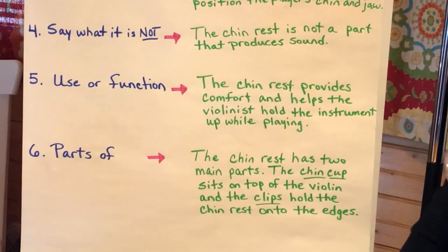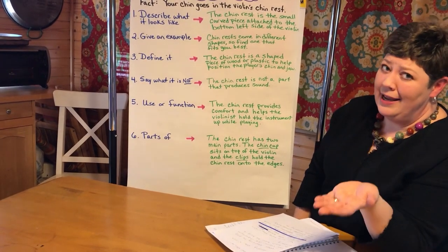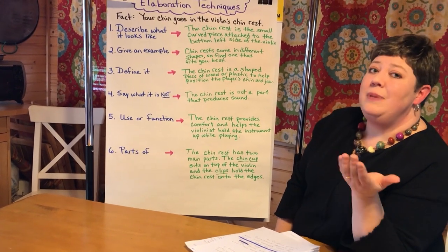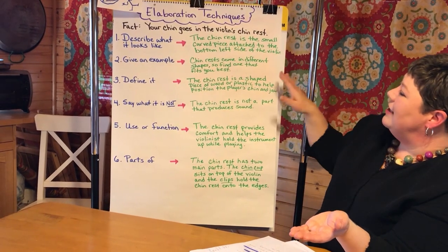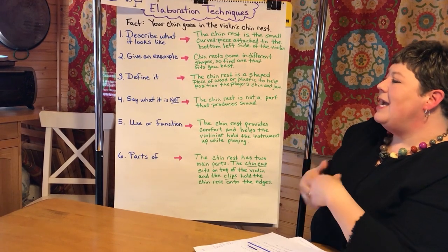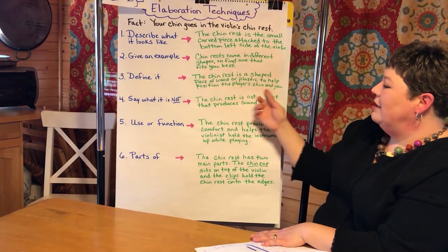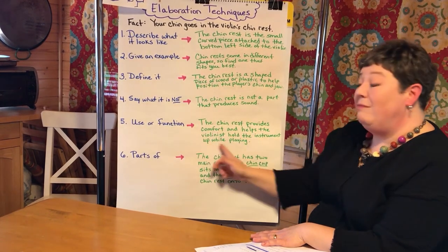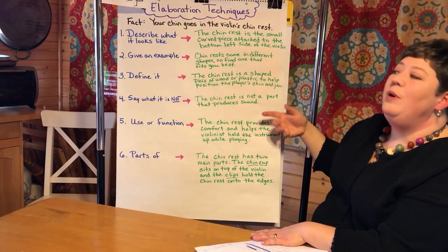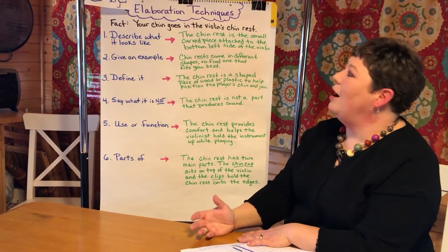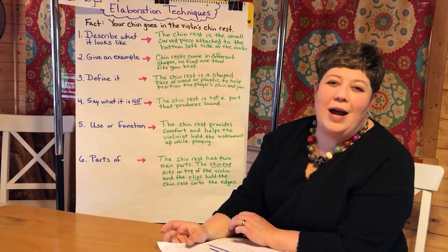So it really depends on what I choose related to what I want my reader to understand. For me, thinking about the beginning violin player, when I say "your chin goes in the violin's chin rest," I'm thinking maybe I need to say what it is. So maybe defining the chin rest and talking about the use and function — maybe even those two together — would help my reader understand more about the chin rest and why we use it on the violin.